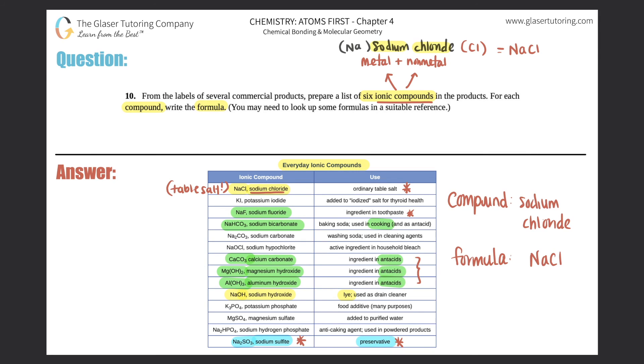Just pick six, write the compound, write the formula, and you are done with this number. Pretty simple. Stay tuned for when we actually learn how to make the formulas from the compounds. I think that's like 10 questions from now, but I'll see you there. Study hard, I'll see you guys in the next question. Have an awesome day.